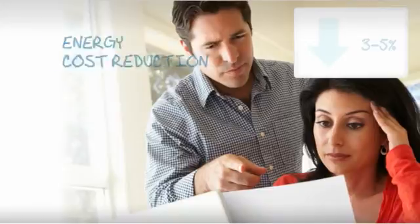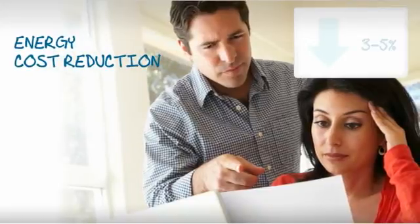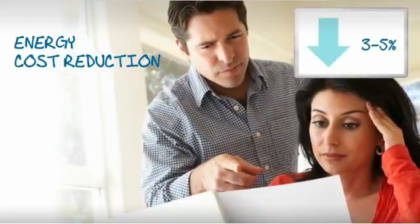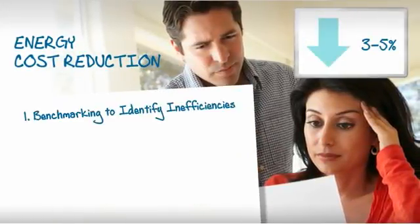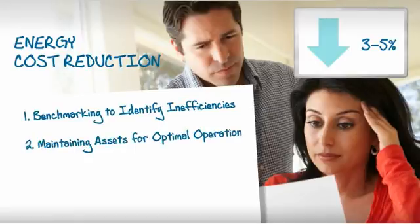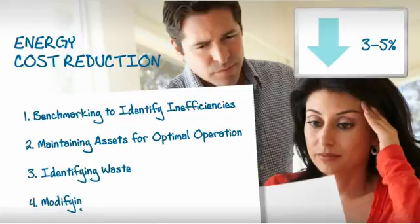With comprehensive information on the energy costs and consumption, John and his team are able to reduce energy costs by 3-5% in the first 12 months by benchmarking to identify inefficiencies, maintaining assets for optimal operation, identifying waste, and modifying behavior.